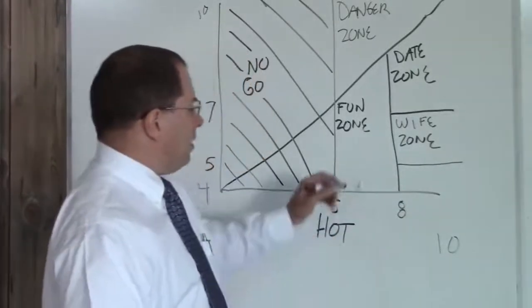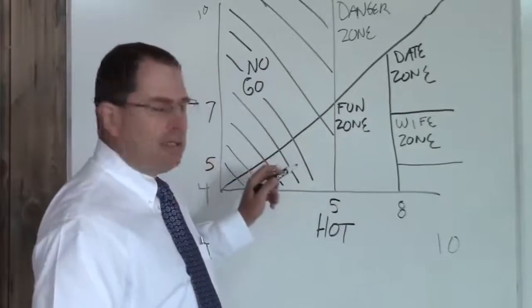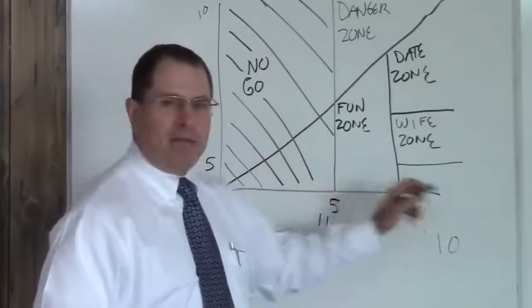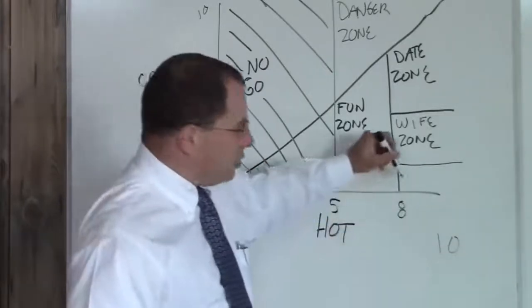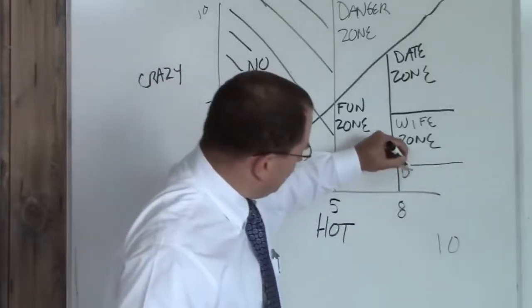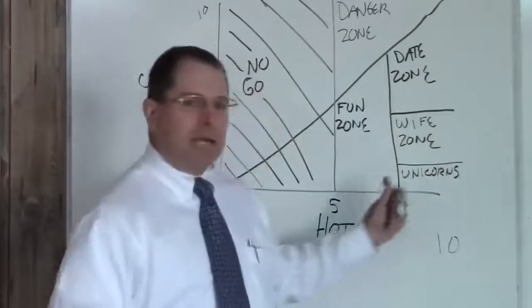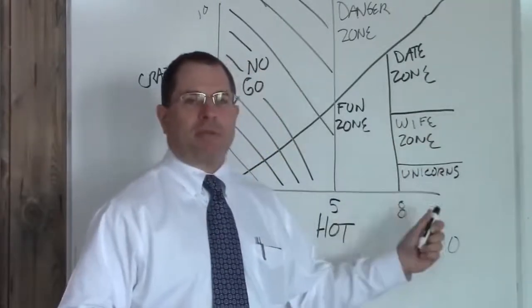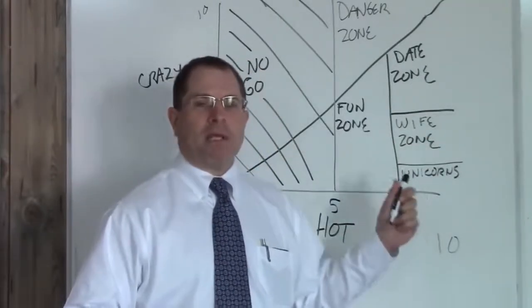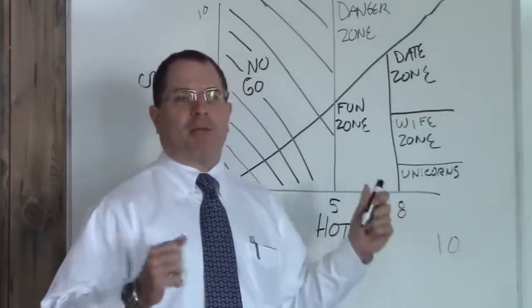Below a five crazy and above an eight hot, this is your unicorn zone. These things don't exist. If you find a unicorn please capture it safely, keep it alive. We'd like to study it and maybe look at how to replicate that.